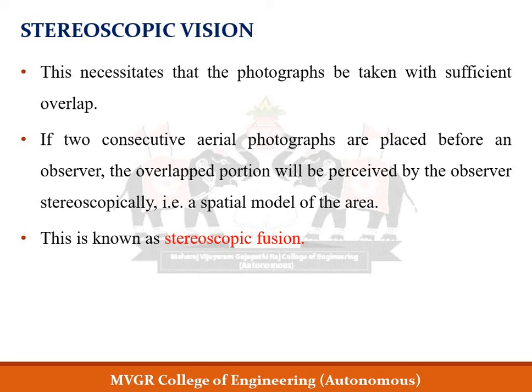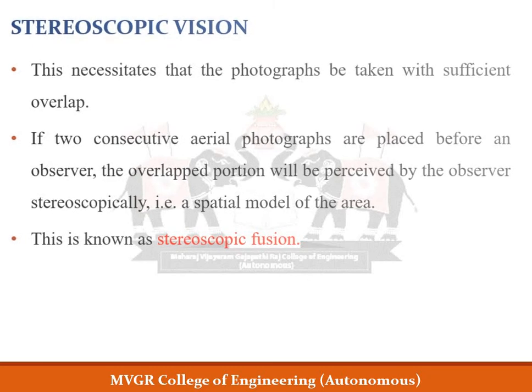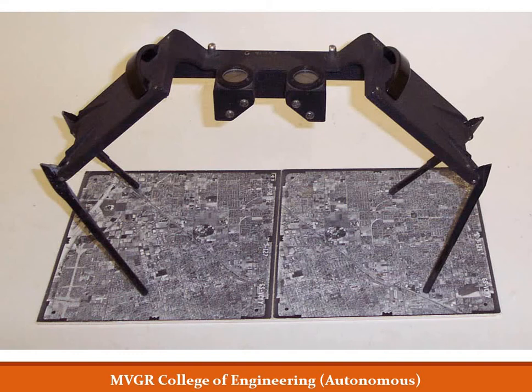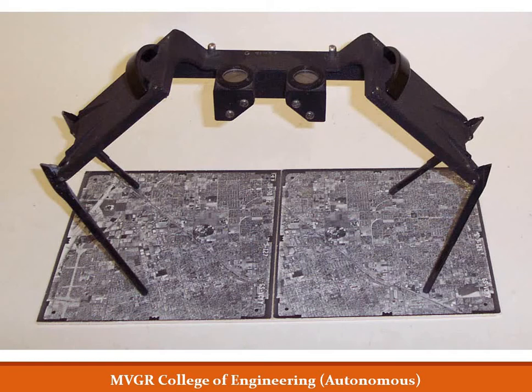Let us see how the stereoscopic instrument looks and how it is used. This is the stereoscopic instrument; below it we place two photographs with two different views, and they must be overlapping. We keep our eyes on the two mirrors — you can see these two mirrors — placing both the left and right eye to view the photograph which is below the instrument.